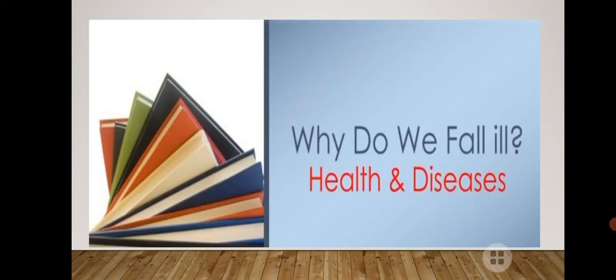Assalamualaikum children, welcome to class 9 biology. We are learning chapter number 13 'Why Do We Fall Ill.' In our previous video we had seen the definitions of health and disease. Health is a complete state of physical, mental and social well-being, and disease is anything which disturbs the functioning of an organ or organ system. Disease-free means a person does not have any kind of physical disturbance in any organ or organ system inside their body.